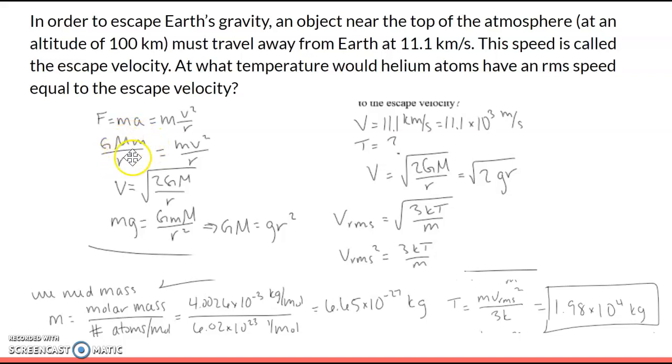Big M represents the mass of the Earth, little m is the object orbiting the Earth, and r is the distance from the center of the Earth to the center of the orbiting object. This equals mv squared over r, where m is the mass of the satellite. We can rearrange this equation: the little m's cancel, one of the r's cancels, and solving for the speed gives us the square root of 2GM over r—gravitational constant, mass of the Earth, distance from the center of the Earth to the object.